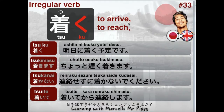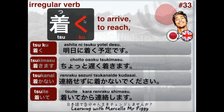Okay guys, so today we're gonna be learning the verb tsuku, which means to arrive or to reach. It's an irregular verb, so we're gonna be changing the ku for ka and ki and the k column.